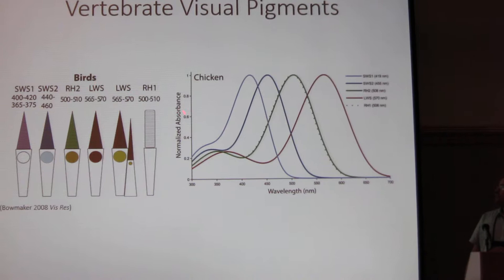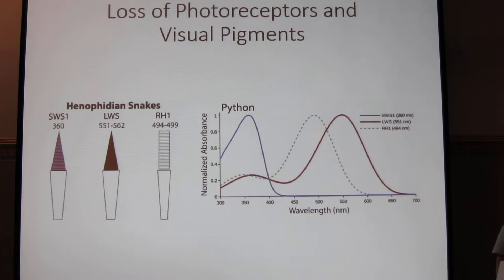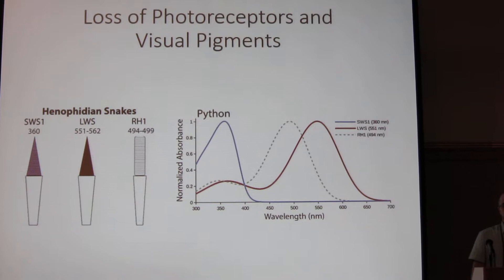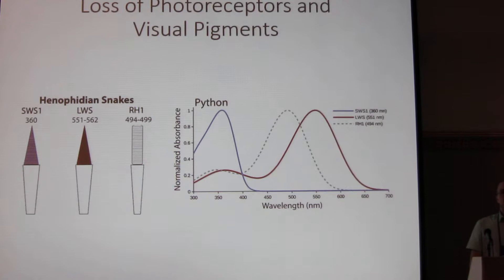In some animals, however, such as the snakes and the geckos, which we'll be talking about, we have actually lost visual pigments. This reduces the range of spectral sensitivity, and also reduces the potential for color vision.